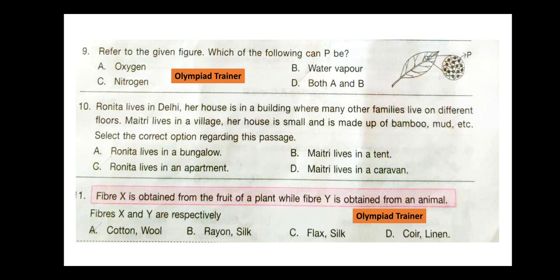Question 11. Fiber X is obtained from the fruit of a plant while fiber Y is obtained from an animal. Fiber X and Y are respectively — option A is the answer. Fiber X is cotton and fiber Y is wool.